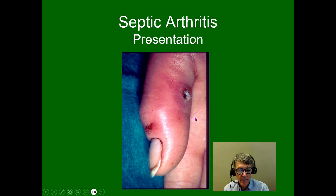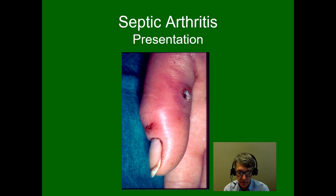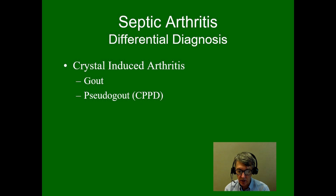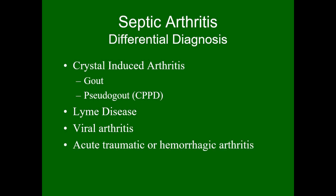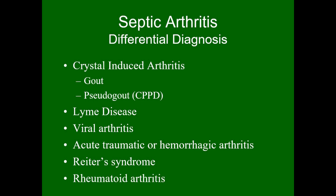With respect to history and physical examination: the presentation is a red hot joint with sudden onset. The history should explore predisposing conditions. The patient may be febrile, but not necessarily. The differential diagnosis includes anything that can cause a sudden onset of a red hot swollen joint — gout and pseudogout most closely mimic septic arthritis. Other conditions to consider include Lyme disease, viral arthritis, acute traumatic or hemorrhagic arthritis, Reiter's syndrome or other seronegative spondyloarthropathies presenting as mono- or pauciarthritis, and polyarticular inflammatory arthritis such as rheumatoid arthritis presenting as monoarthritis.